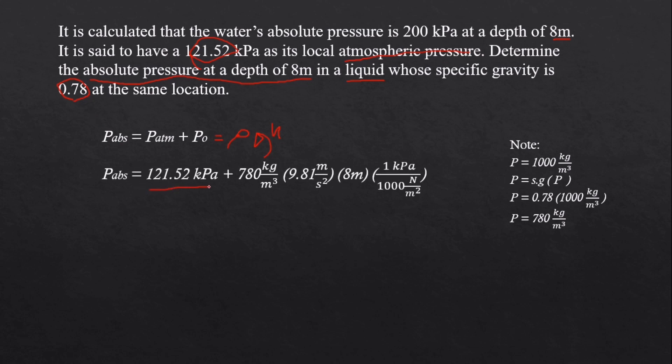The 121.52 kilopascal is the atmospheric pressure plus 780 times 9.81 times 8, which comes from the formula ρgh.